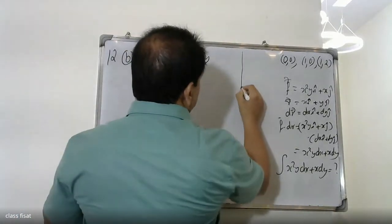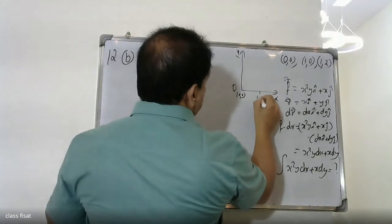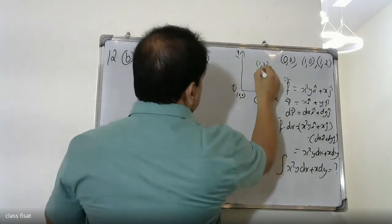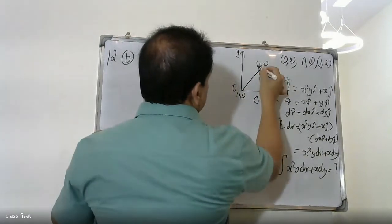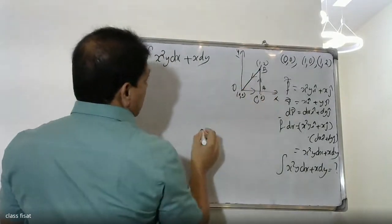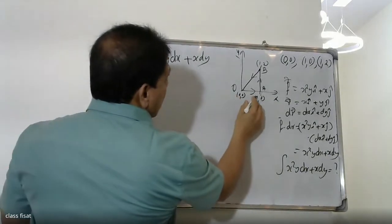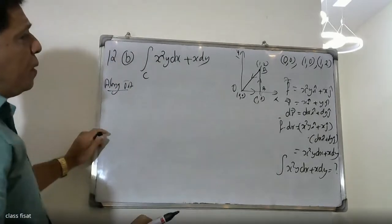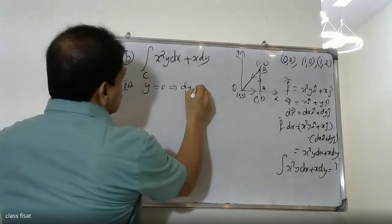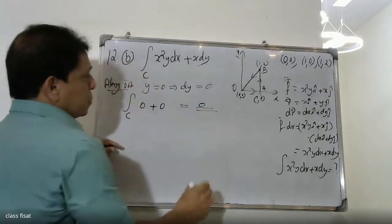We identify point O at (0,0) and the path segments: O to A, A to B, and B to O. For the first portion, we work along the segment from O to A.